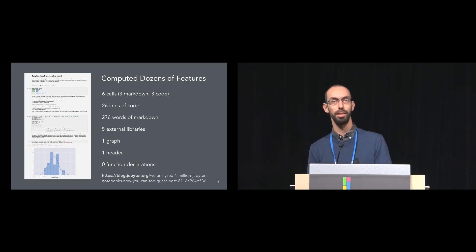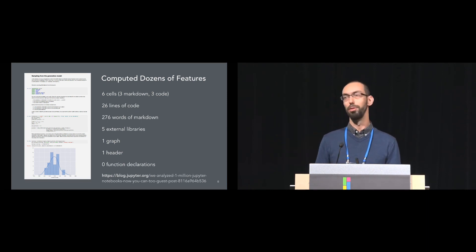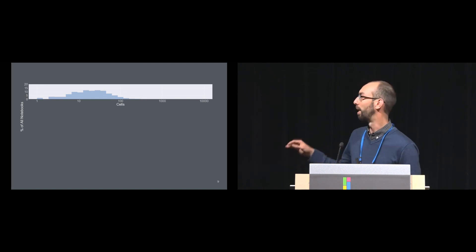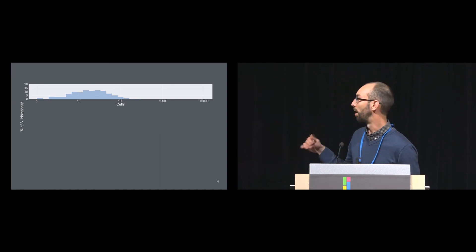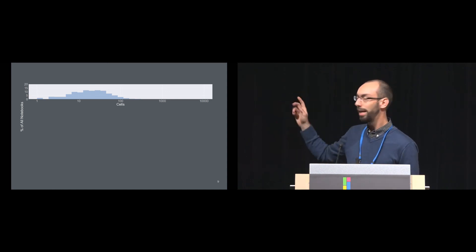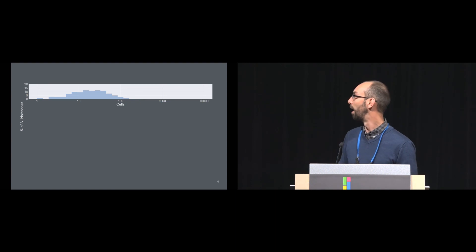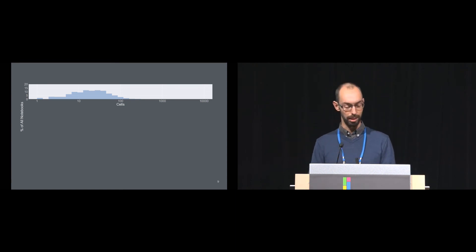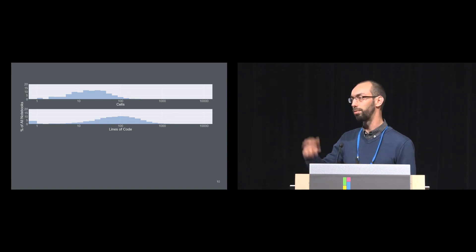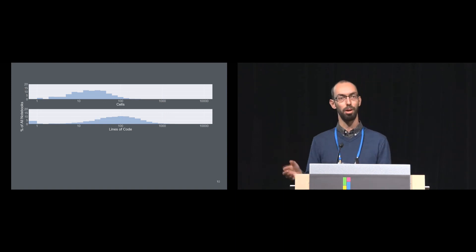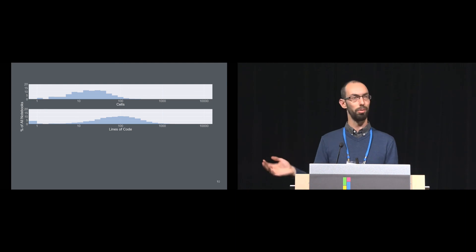One of the most striking findings was one of the simplest questions: how long are these notebooks, in terms of text and lines of code? On a log-scale x-axis of number of cells, we get a log-normal distribution with a median of around 20 cells. For number of lines of code, we get a similar log-normal plot, with a median of about 100 lines of code. But there's a small bump to the left — about three or four percent of all notebooks have no code in them whatsoever, which might be index notebooks containing links to other notebooks.